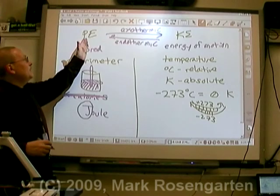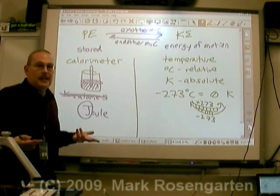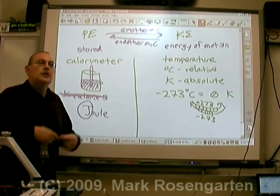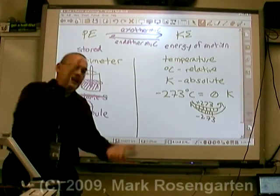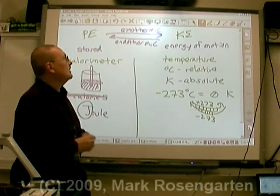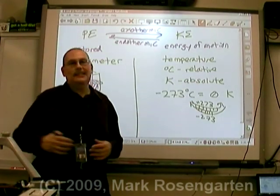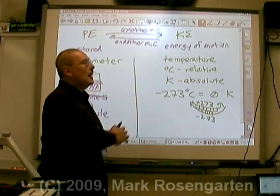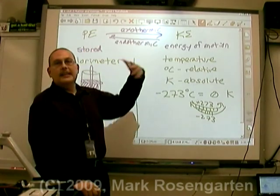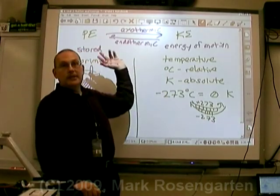To measure potential energy, you have to convert it out of storage — like breaking open a piggy bank to count your money. Kinetic energy is already out in the open and easy to measure. So those are the two types of energy, and once again: you can't create them, you can't destroy them — all you can do is convert them from one form to the other.